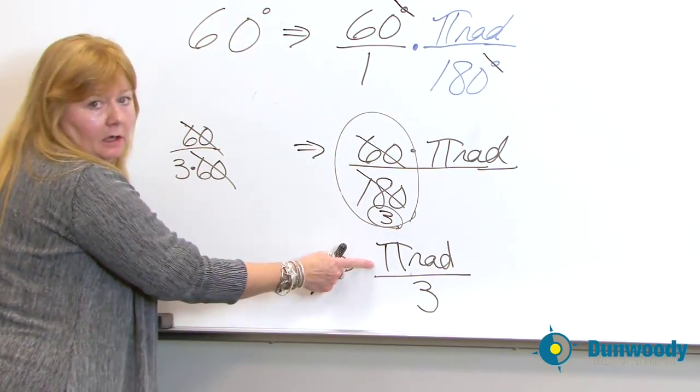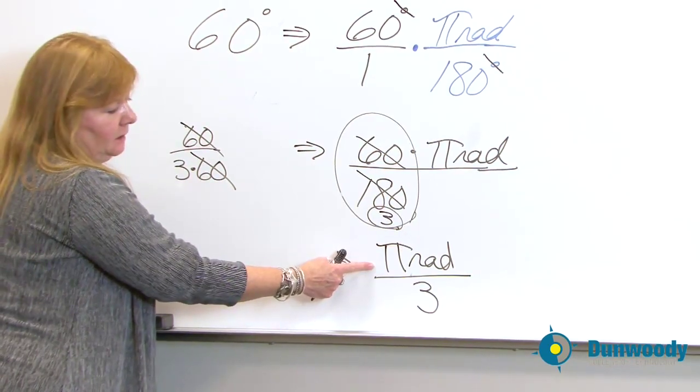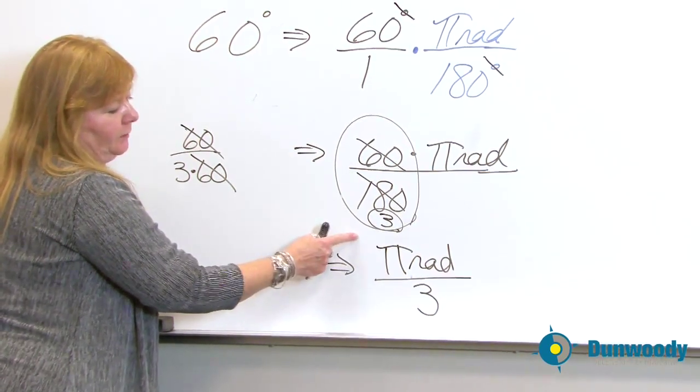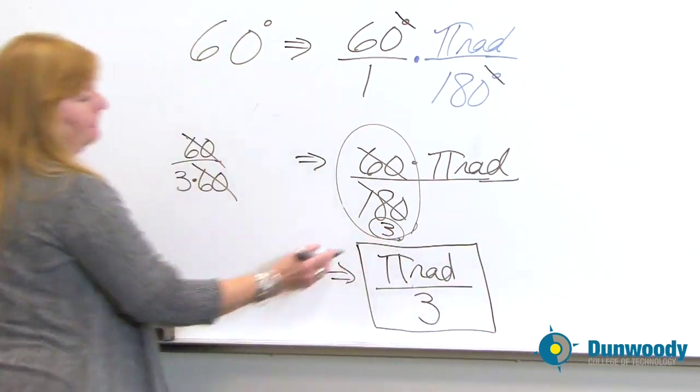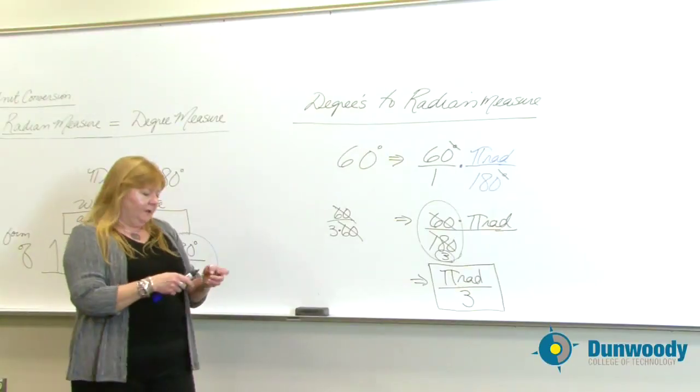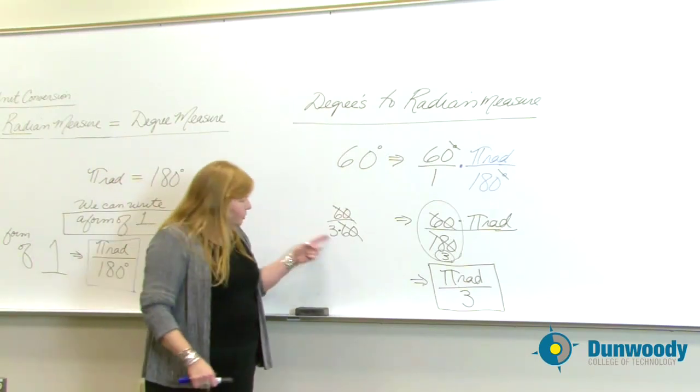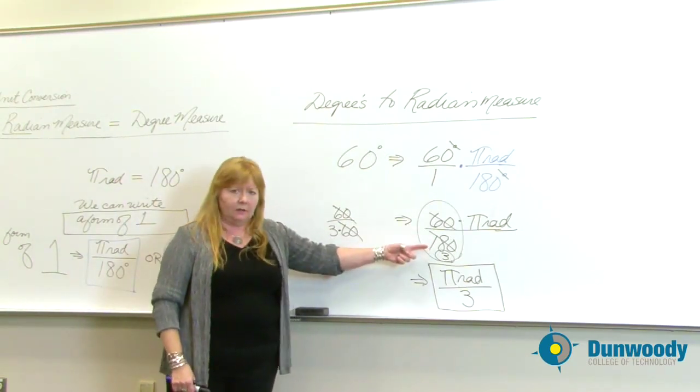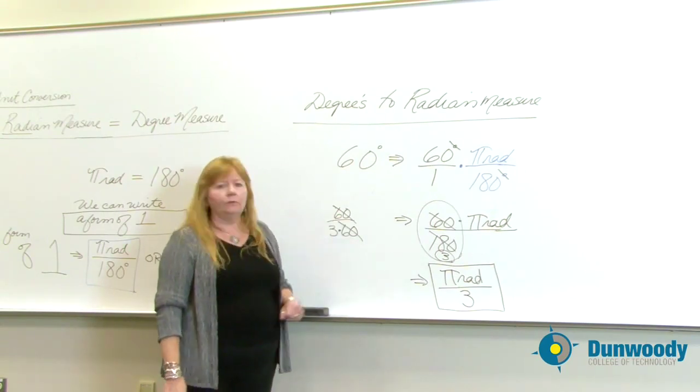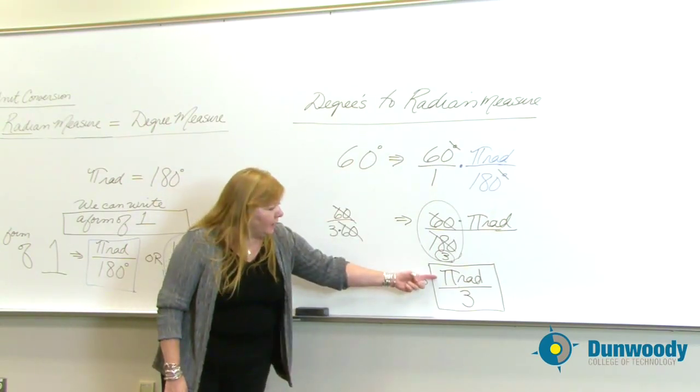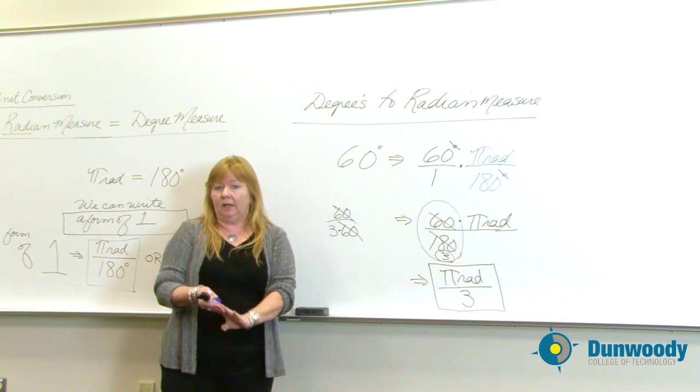So 60 divided by 180 gives you 1 third. We generally don't write the 1 here. It's implied. You have 1, if you will, π rad over 3. So if you're finding that you're getting hung up with your fractional piece, and you're reducing, and you're not remembering how to do that, that's something to review for you. But π radian over 3 is indeed your answer.